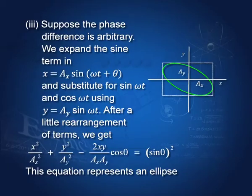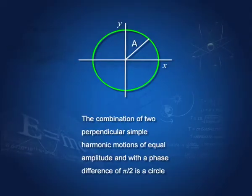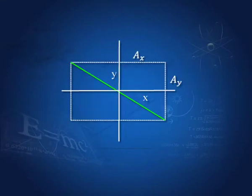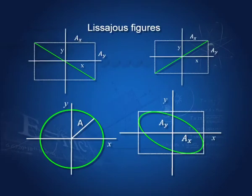So when two perpendicular simple harmonic motions are combined, the general path is an ellipse; in the special case ax = ay it becomes a circle. All these resulting figures — straight lines, ellipses, circles — are known as Lissajous figures. In science demonstrations, arrangements of perpendicular pendulums with different phase differences and amplitudes can generate a variety of Lissajous figures.